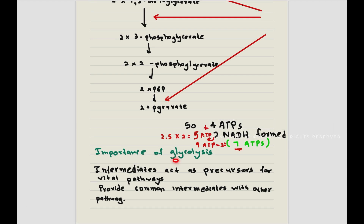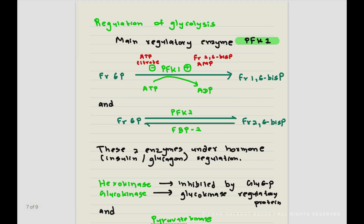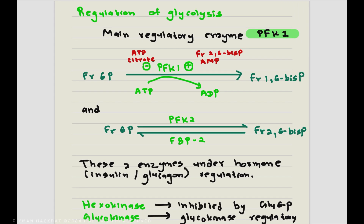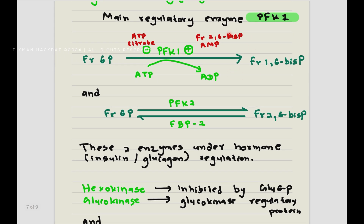The importance of glycolysis: these intermediates are often used as precursors for vital pathways, and some provide common intermediates with other pathways. Regarding regulation of glycolysis, the main regulatory enzyme is PFK1, which turns fructose-6-phosphate into fructose-1,6-bisphosphate. PFK1 is activated by fructose-2,6-bisphosphate and AMP, and it is inhibited by ATP and citrate.